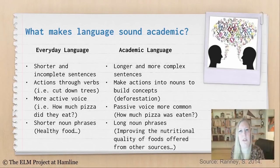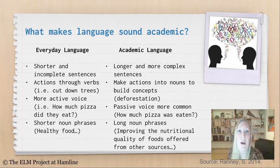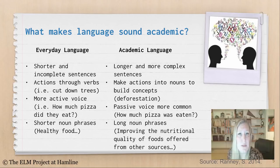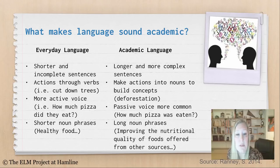So what makes language sound academic? In everyday language, we use shorter and incomplete sentences, maybe just utterances like 'hello' and 'good morning.' In academic language, we use longer and more complex sentences, like the sentences used in this presentation. In everyday language, we use actions through verbs, like 'to cut down trees' or 'to eat pizza.' In academic language, we tend to turn our actions into nouns to build concepts — an example would be 'deforestation.'